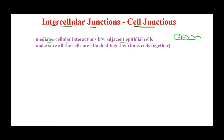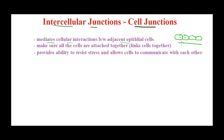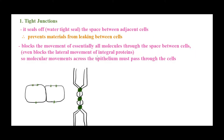These junctions mediate cellular interaction between adjacent epithelial cells, connecting one cell to another. Along with linking and attaching cells together, intercellular junctions also provide the ability to resist stress and allow cells to communicate with each other. There are three types of intercellular junctions. The first one is tight junction. As the name suggests, these junctions are really tight and they actually seal off the plasma membrane of two neighboring cells.